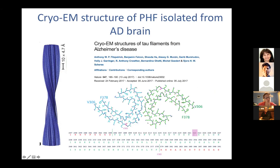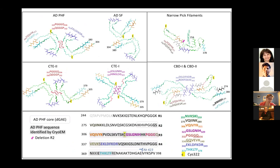We know that tau molecules fold into a very specific structure: an in-register parallel structure whereby each molecule folds into a single layer, stacking to form a cross-beta structure. What's really interesting is that there are now lots of structures solved for tau from different diseases — from AD, from chronic traumatic encephalopathy, from Pick's disease, and from corticobasal degeneration. There are similarities and differences between the structures, and it seems that a specific polymorph depends on the disease. The fragment that forms the filament core is pretty much always in the range of residues 304–380 or 305–379.